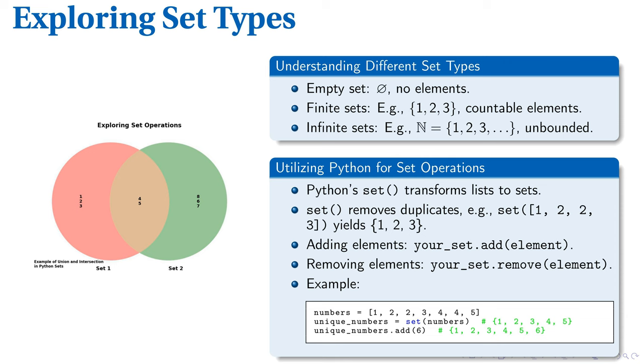Let's consider an example. We convert a list with duplicates, [1, 2, 2, 3, 4, 4, 5], into a set with unique numbers: {1, 2, 3, 4, 5}. Later, adding the number 6 changes our set to {1, 2, 3, 4, 5, 6}.